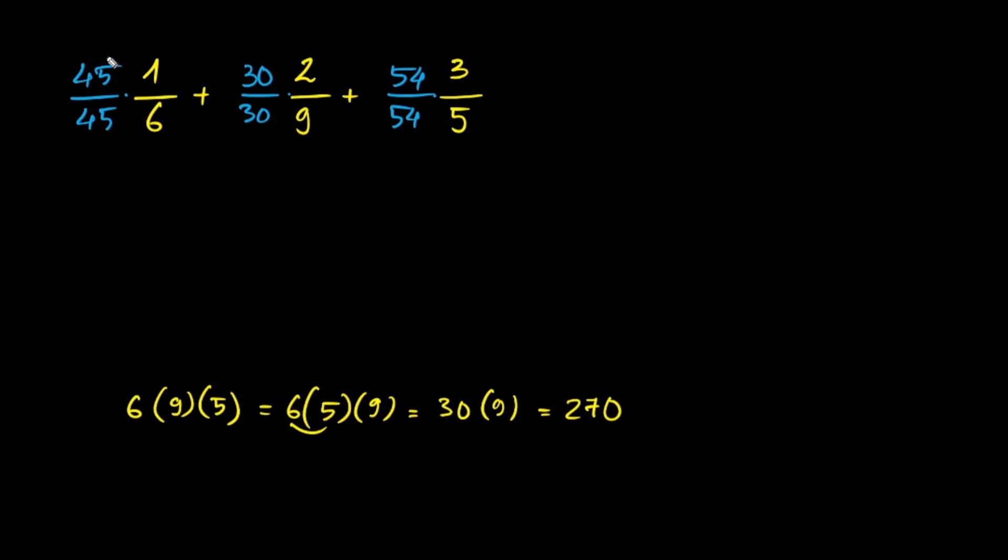Now we do the numerators. 1 times 45 is 45, 6 times 45 is 270. 2 times 30 is 60, 9 times 30 is 270. 3 times 54 is 162, 5 times 54 is 270.